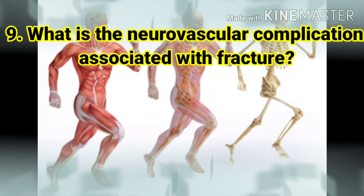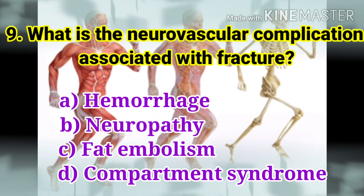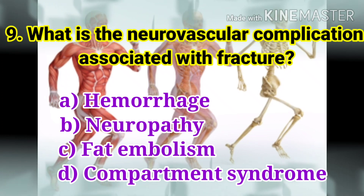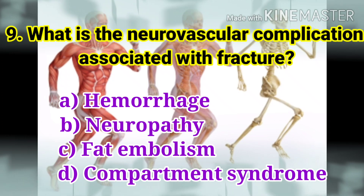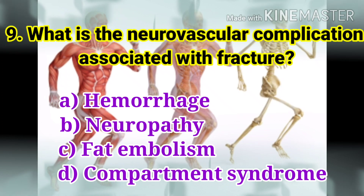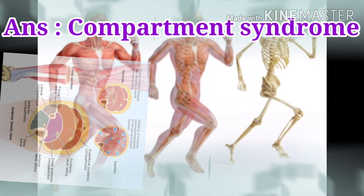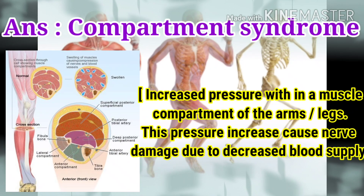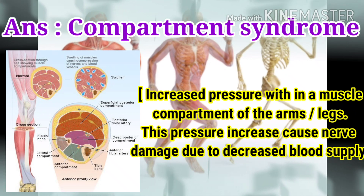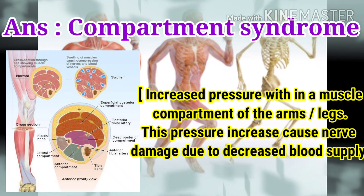The next question: what is the neurovascular complication associated with fracture? The options are hemorrhage, neuropathy, fat embolism, and compartment syndrome. The answer is compartment syndrome. Compartment syndrome is increased pressure within a muscle compartment of the arms or legs. This pressure increase causes nerve damage and decreased blood supply.